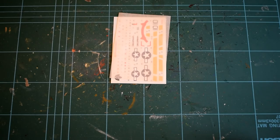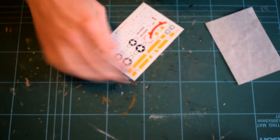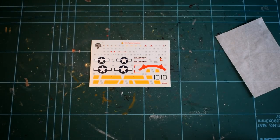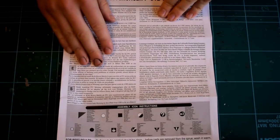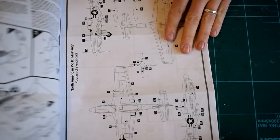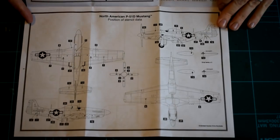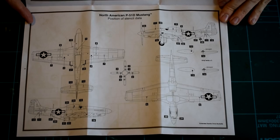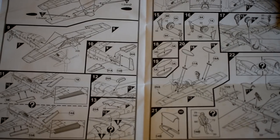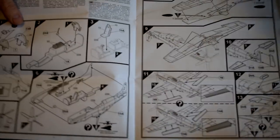The decals are well printed and there is a large number of them. Some care will have to be taken when applying them. The instructions come as a black and white A4 booklet, featuring step by step images and some information about the real P-51, and also some safety warnings. The instructions are easy to follow, and all paint numbers are clearly annotated throughout.